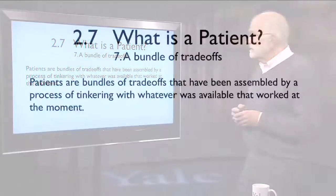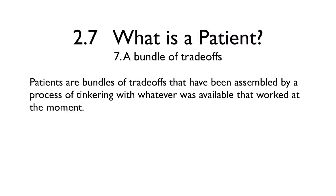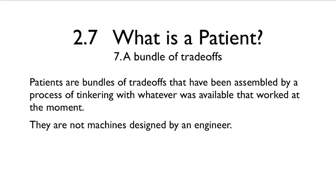Trade-offs originate evolutionarily in a process of tinkering that just works with whatever variation happens to be available at the moment. That essentially means the traits connected in trade-offs are to a certain degree arbitrary — machines not designed by engineers. It is not as though every single aspect of an organism has been perfected. Evolution simply has been working with available variation, and the result is often compromised.